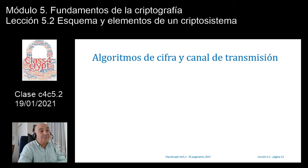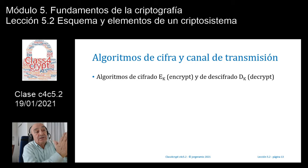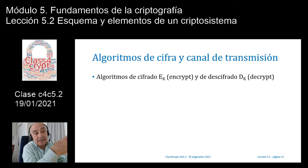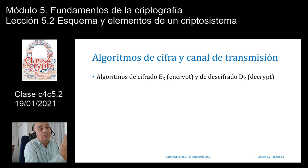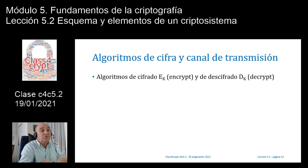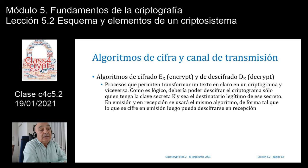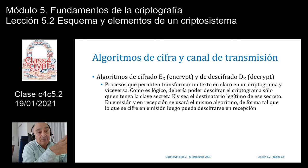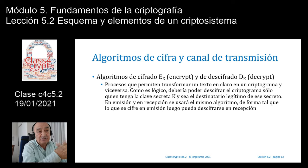Los algoritmos de cifra son: E_K (de 'encrypt') en el extremo emisor, y D_K (de 'decrypt') en el extremo receptor. Estos algoritmos permiten transformar un texto en claro en un criptograma y viceversa. Lógicamente, solo la persona que tenga la clave K y sea el destinatario legítimo podrá descifrar el criptograma. La clave K tendrá ciertas características según se trate de un sistema simétrico —misma clave en ambos extremos— o asimétrico —claves distintas—.